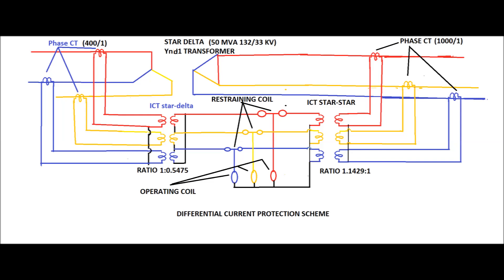The ratio of ICTs on the star-star type ICT is 1 to 1.1429. Restraining coils are used to avoid unwanted tripping or mal-operation of the relay. When the restraining force is less than the operating force, the relay will send a trip signal. This is the principle of operation of the three-phase differential relay.